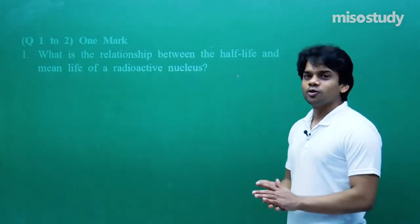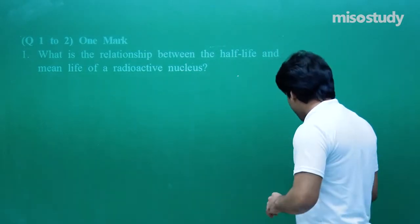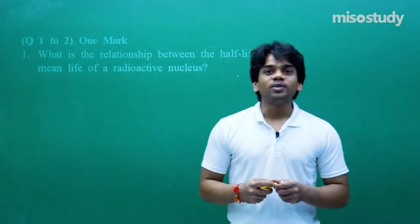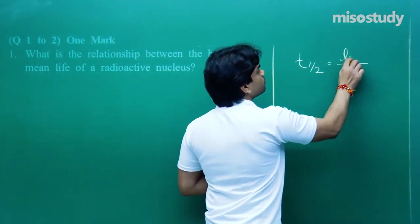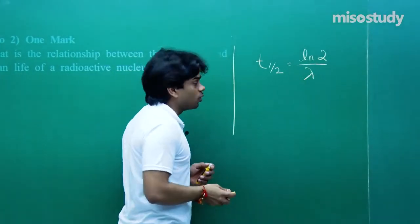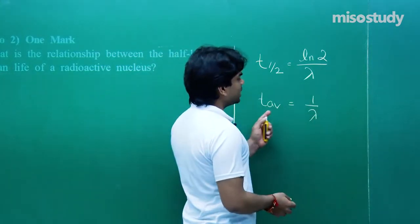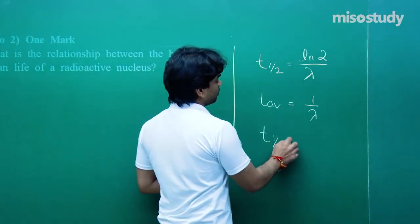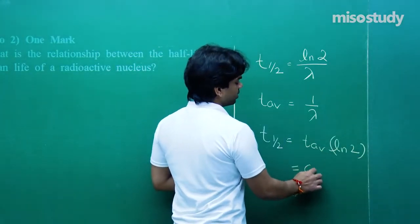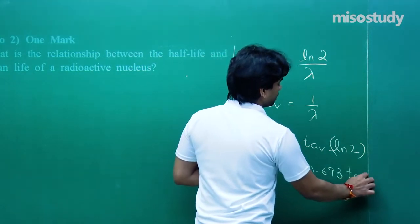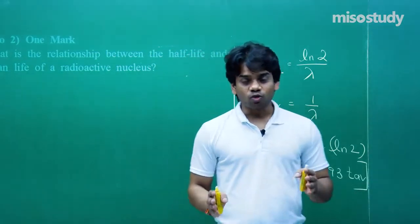The first question is a one-mark question. CBSE has mixed mark pattern questions. What is the relationship between the half-life and mean life of a radioactive nucleus? Half-life T half equals ln2 upon lambda, and T average equals 1 by lambda. So T half equals T average multiplied with ln2, which is 0.693. Therefore, T half equals 0.693 times T average — that is the relation between half-life and mean life.